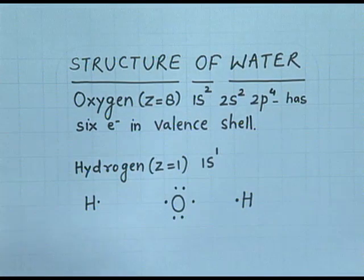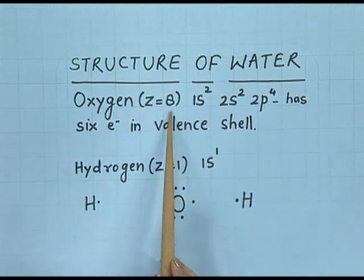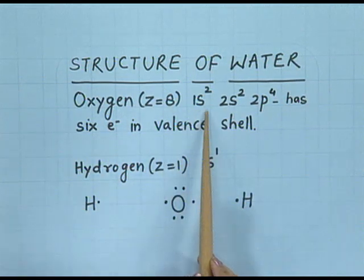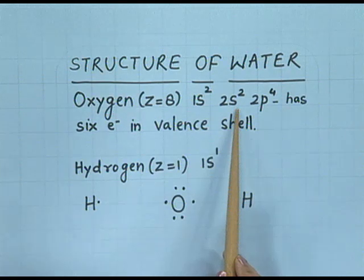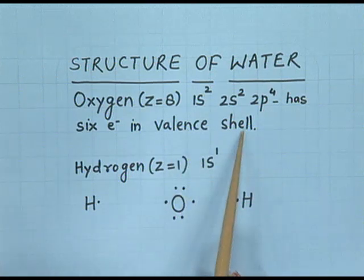Today let us study the structure of water. Water is made up of two elements: hydrogen and oxygen. Oxygen has atomic number 8, with electronic configuration 1s2, 2s2, 2p4. It has 6 electrons in the valence shell.